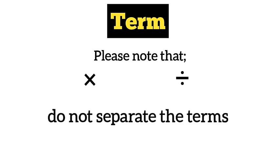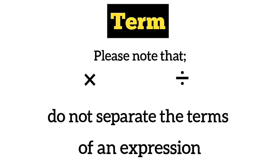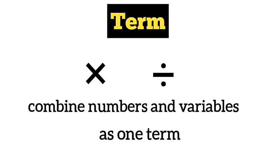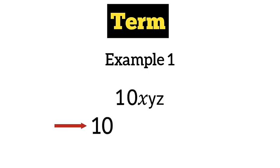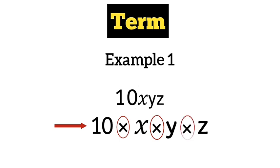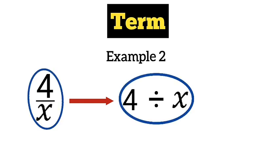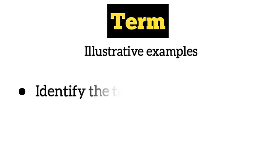Please note that multiplication and division signs do not separate terms of an algebraic expression. Instead, multiplication and division signs combine numbers and variables as one term. For example, in the expression 10xyz, the number 10 is multiplying the variables x, y, and z, so 10xyz is considered a single term. Similarly, in the expression 4 divided by x, the value 4 over x is considered a single term.